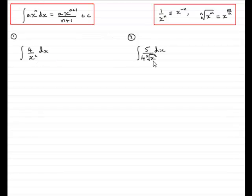And in this example, I'm going to show you how we can do much the same kind of thing when you've got some kind of root function in the denominator, and also when you've got a number in the denominator as well. Okay, so let's start with number 1 then, the integral of 4 over x squared with respect to x.